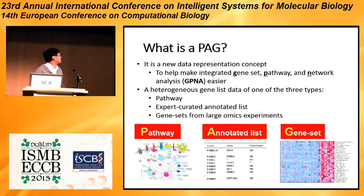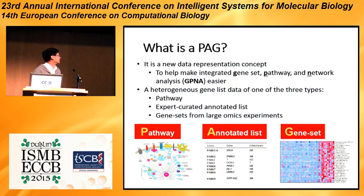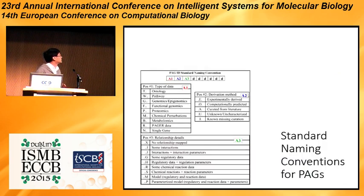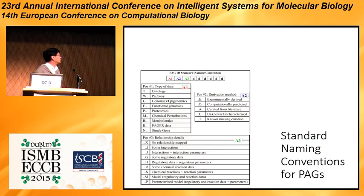So what exactly is a PEG? It's an integrated gene set pathway network analysis data representation concept. It can be a pathway with or without structural details, or an annotated list that is expert curated, or gene sets that are gene signatures from large omics experiments. We developed a naming standard to capture the diversity of data sources. The type of data could be ontology, pathway, functional genomics, and so on. The diversity of derivation method can be experimentally derived, computationally predicted from literature, or simply unknown.